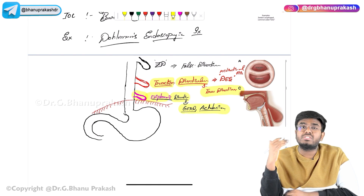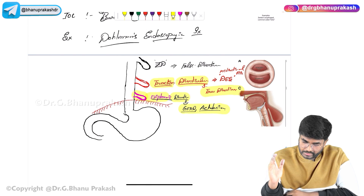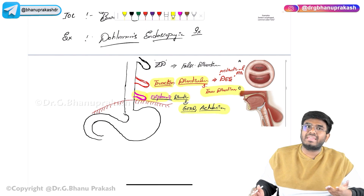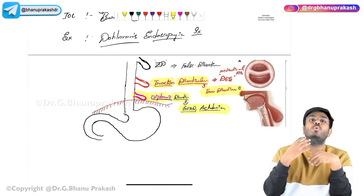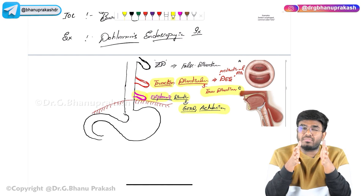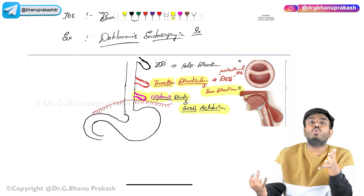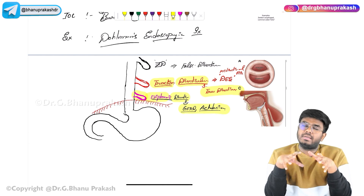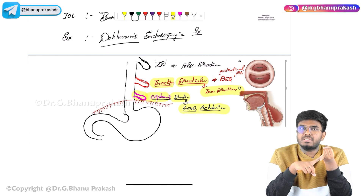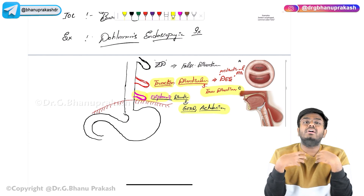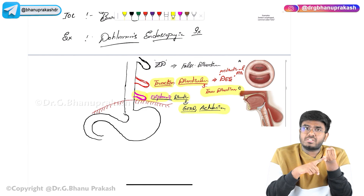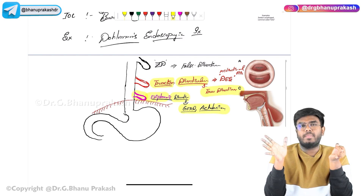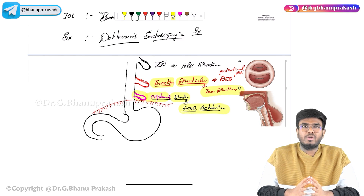To summarize: traction diverticulum is seen in diffuse esophageal spasm and mediastinal fibrosis, and is an example of a true diverticulum. Zenker's diverticulum originates from Killian's dehiscence — the weak area between the inferior constrictor muscles. When pressure increases, mucosa and submucosa protrude through that area. Complications include aspiration and lung abscess. Symptoms are dysphagia and halitosis. Investigation of choice is barium swallow, and the surgery is Dolman's Endoscopic Stapling procedure. Hope the video is helpful.